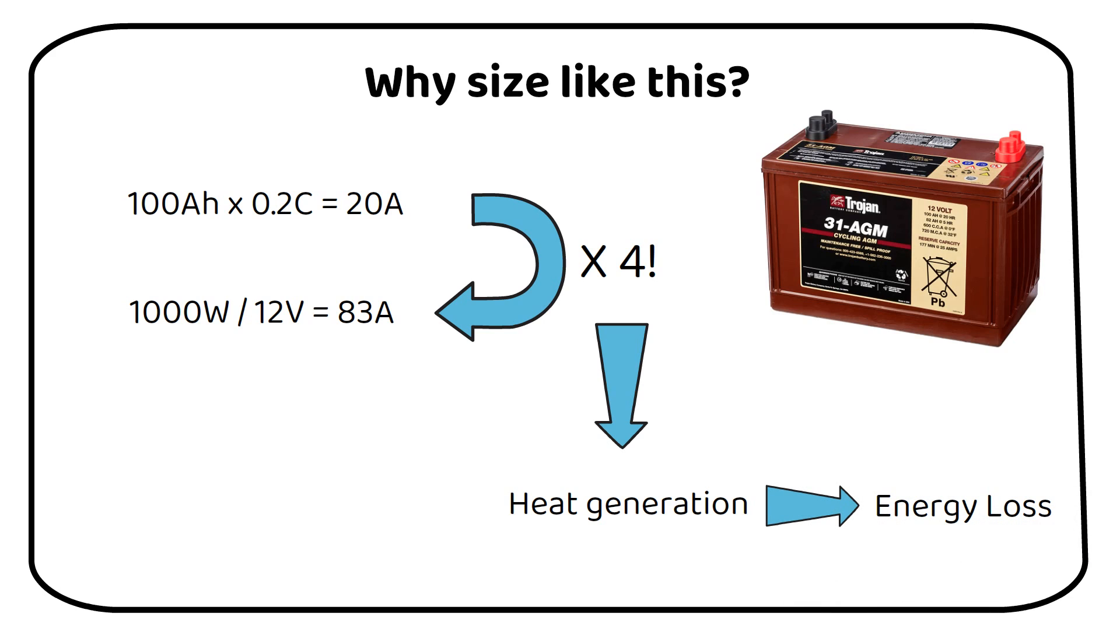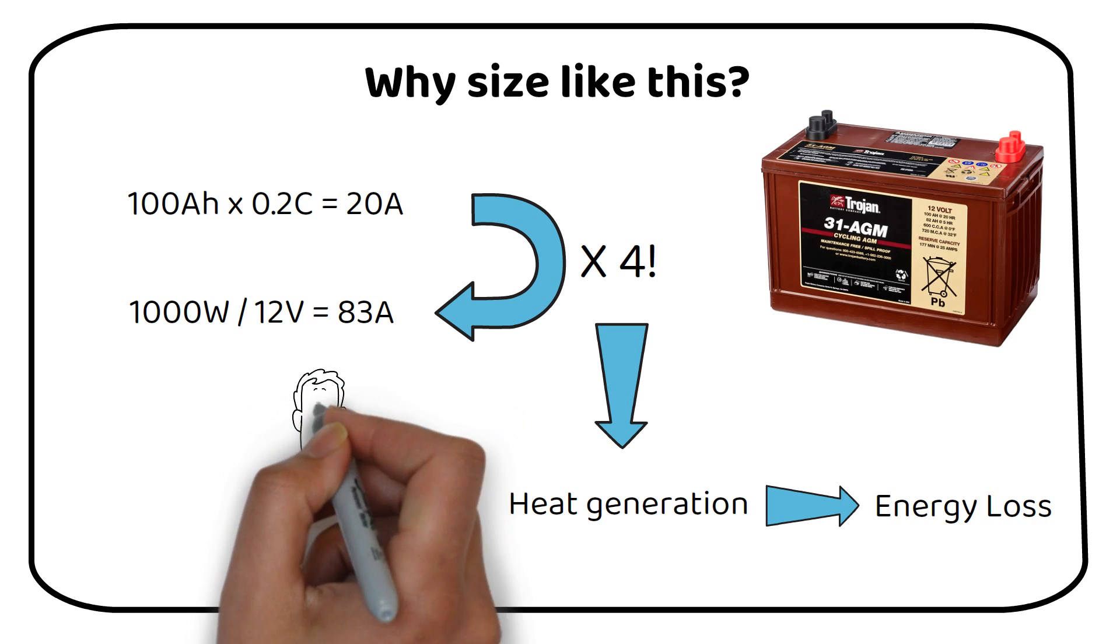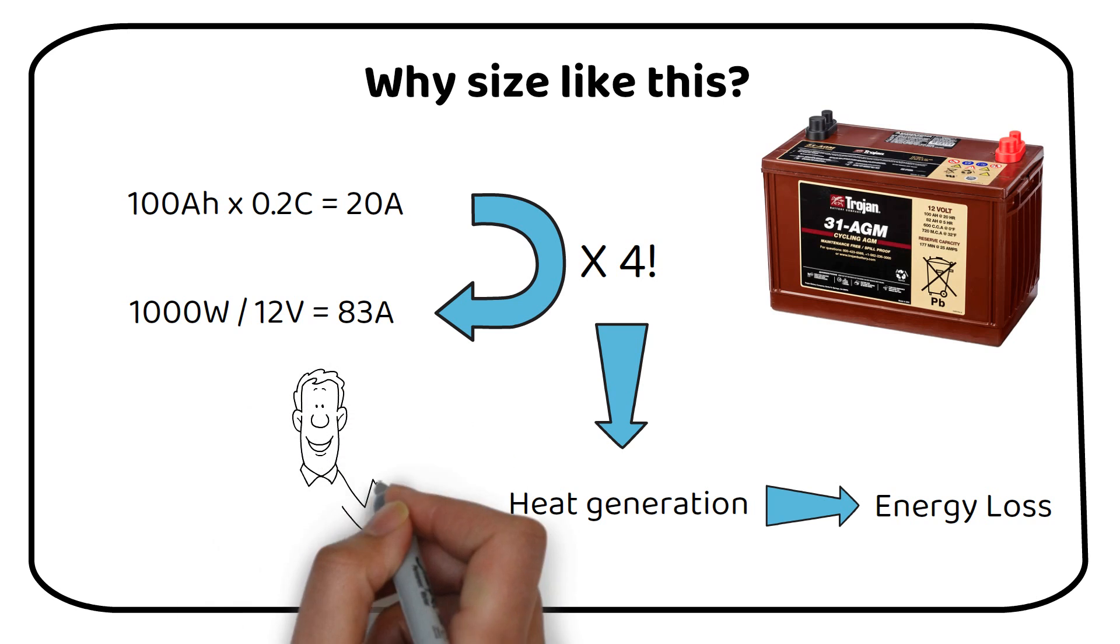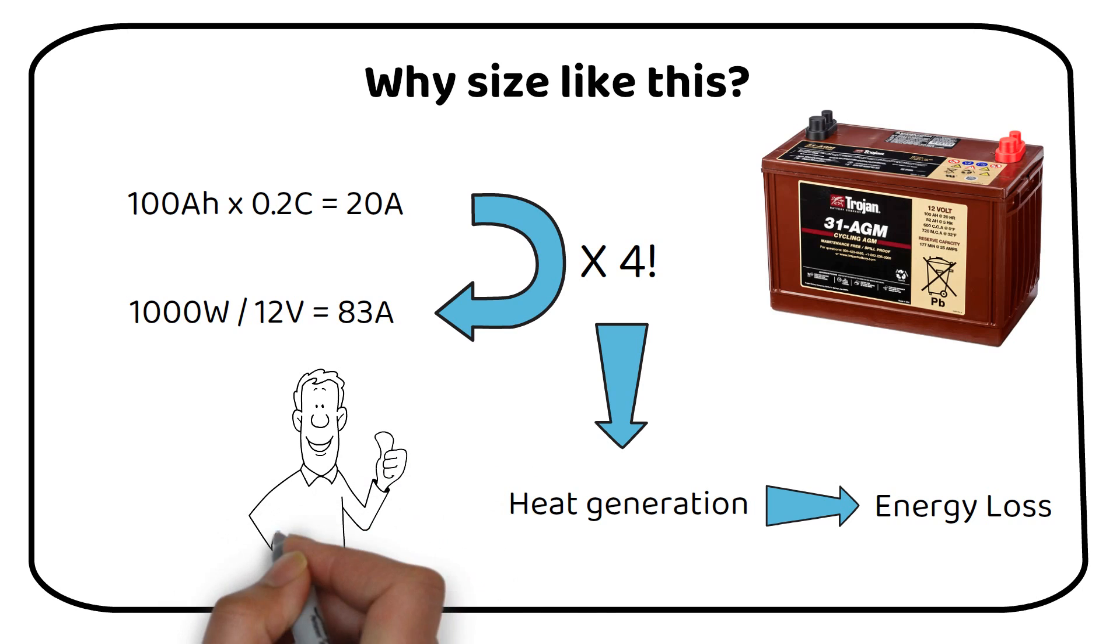This is because deep cycle lead acid batteries are not designed to handle such high current demands. Therefore, to minimize heat induced losses and prevent battery wear, it's essential to properly size the battery. By following the outlined methods, we ensure a harmonious and efficient operation of our solar power system.